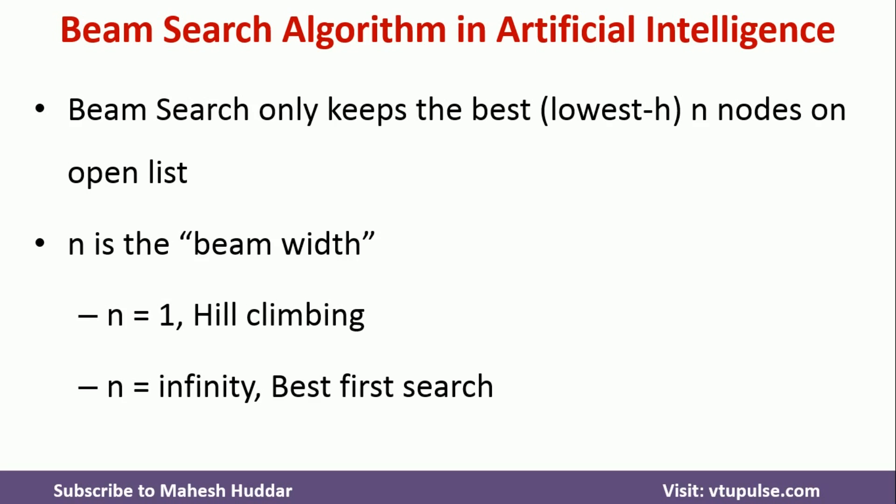N may be anything, N may be 1 or N may be infinity. If the value of N is equal to 1, the meaning is hill climbing. It will consider the immediate node, that's it. It will not consider all possible things, it will consider the immediate node and then from there onwards it will go on searching the goal.